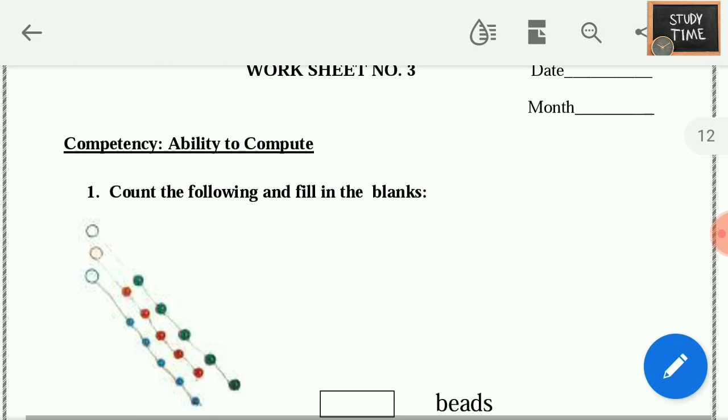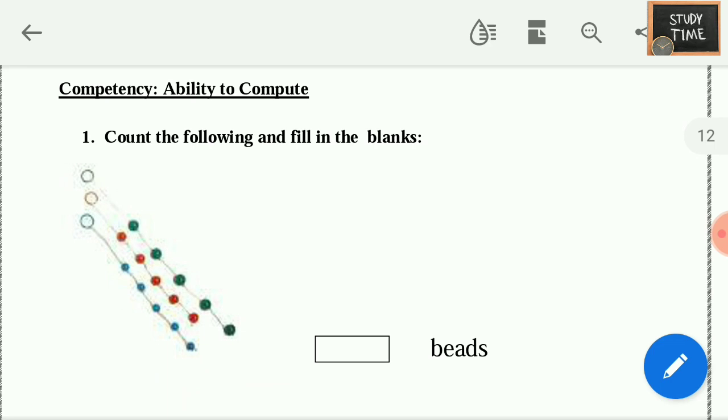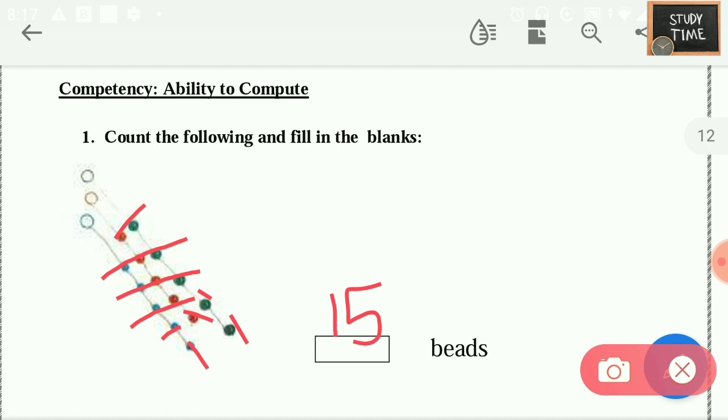Next, count and fill in the blanks. Here you have to count the beads: 1, 2, 3, 4, 5, 6, 7, 8, 9, 10, 11, 12, 13, 14, 15. So 15 beads are there, isn't it? 5, 5, 5 - 15 beads are there.